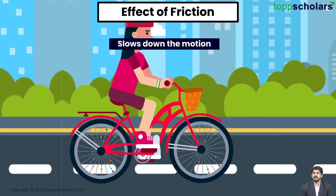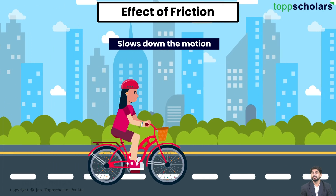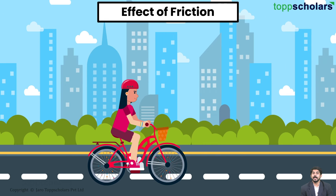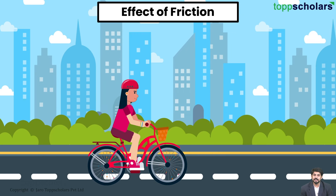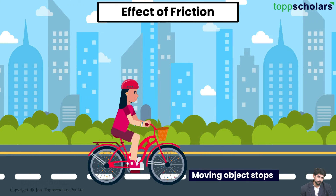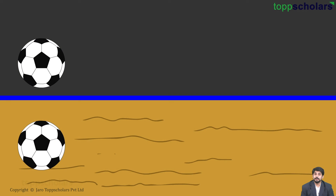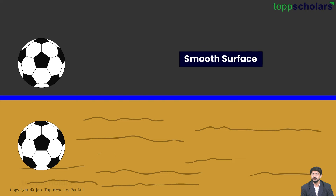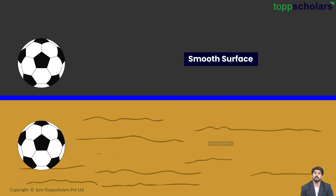And so it slows down the motion and finally the moving object stops. Look over here — a ball is rolled on a smooth surface and another similar ball is rolled on a rough surface.